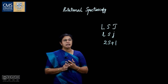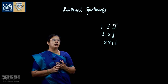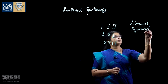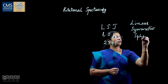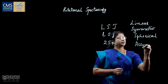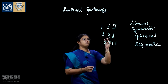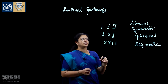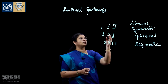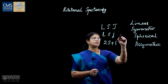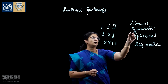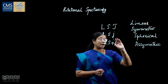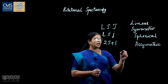Rotational spectroscopy deals with the rotation of molecules. Molecules can be classified as linear molecules, symmetric top molecules, spherical top molecules, and asymmetric top molecules. This classification is based on the moment of inertia about the axis of rotation. For three moments of inertia IA, IB, and IC: for a linear molecule, IA equals 0 and IB equals IC. For symmetric top, IA is not zero but IB equals IC, with IA greater than or less than IB. For spherical top, IA equals IB equals IC. For asymmetric top, all three are unequal.